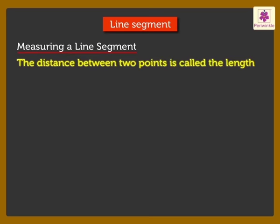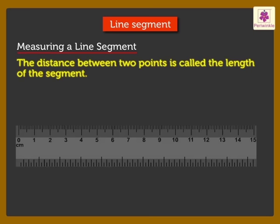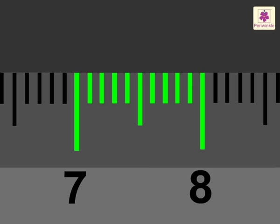Now, let us see how to measure a line segment. The distance between two points is called the length of the segment. To measure a line segment, we use a ruler. A ruler is marked with centimeters. Each centimeter is divided into ten parts. Each part is one millimeter.